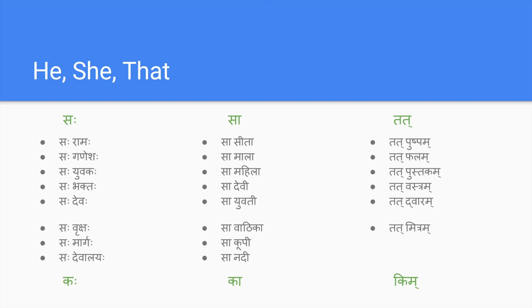Now let's have a small exercise. You can frame any sentences with saha, sa, and tat, and try to make questions for those statements. For example: 'saha ramaha' or 'saha devalayaha', and then questions like 'kaha devalayaha' or 'saha kaha'. Can anyone frame a sentence and make questions for it?